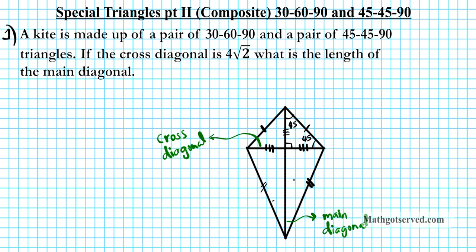Now looking at the lower triangle, this is the 30-60-90 triangle. With 90 degrees here, the question is which is the 30 and which is the 60 degree angle. We can clearly see this is the smaller of the two, so this angle here is the 30 degree angle, and this angle here is the 60 degree angle.